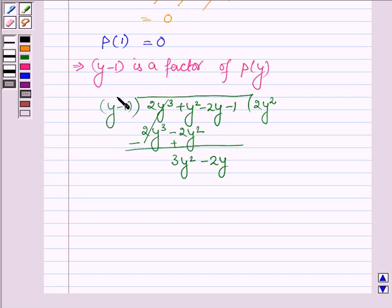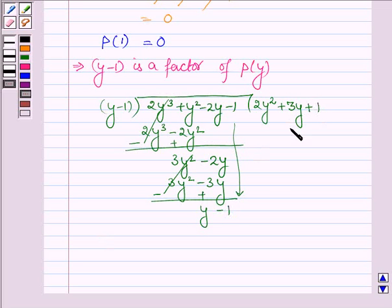Now multiplying (y-1) by 3y we get 3y² - 3y. Changing the signs these two cancel out and we have +y, and taking 1 down we have -1. Then multiplying (y-1) by 1 we get y - 1 and thus the remainder is 0.